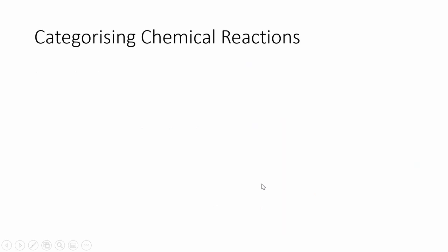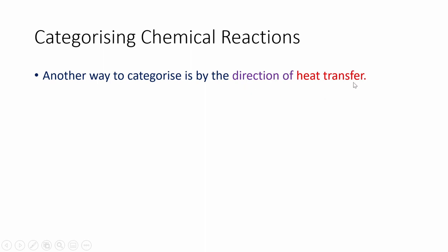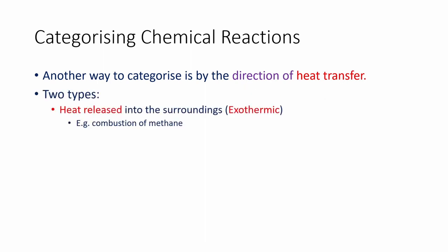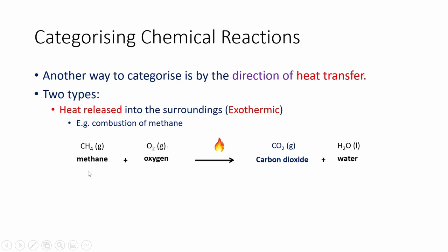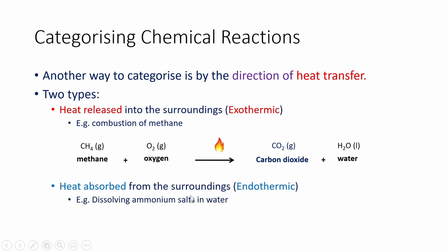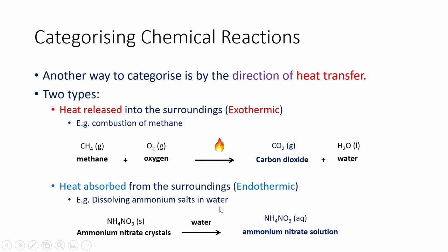Onto the focus of today's video: categorizing chemical reactions by heat transfer. There are two categories. Chemical reactions that release heat into the surroundings are known as exothermic reactions — all combustion reactions, without exception, are exothermic. For example, the combustion of methane in the presence of oxygen produces carbon dioxide and water, and releases a huge amount of heat energy. We also have reactions that absorb heat from the surroundings, known as endothermic reactions. One example is the dissolution of ammonium nitrate crystals in water to form ammonium nitrate solution, which absorbs heat from the surroundings into the chemical system.